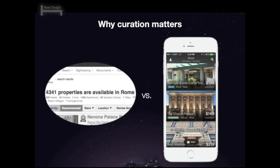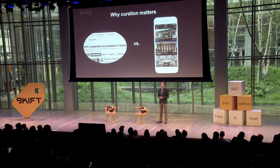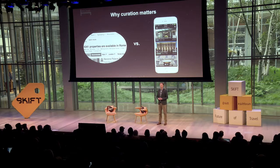Another way to look at this: on an OTA, you've got 4,300 properties in Rome. That is an asset and a virtue on the web where you can sort and filter down to find the perfect hotel. It's a lot of work, but it's a full comprehensive stack. On a mobile app, on the mobile form factor, that becomes a liability. It becomes something that's overwhelming to look through. It's the paradox of choice. That's why curation matters.